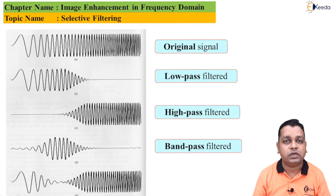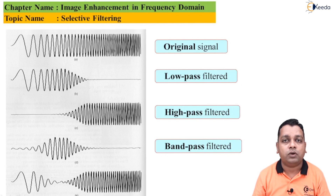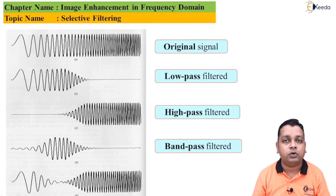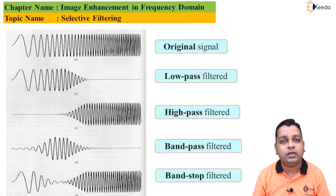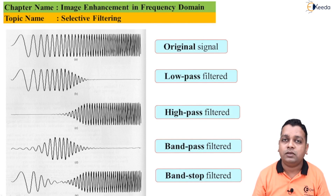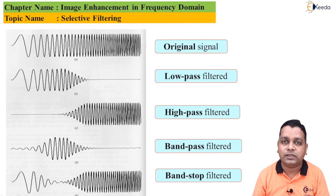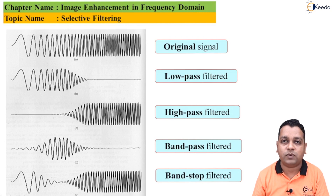When we combine both — filtering some low frequency and some high frequency portions — we form a band pass filter. Only a selective frequency range is generated in the output, hence it is called the band pass filtered signal. Similarly, we can reject a selective band of frequencies, and that filter is called a band stop filter. The portion with frequency below a lower threshold and above an upper threshold is passed, while the band in between is rejected.